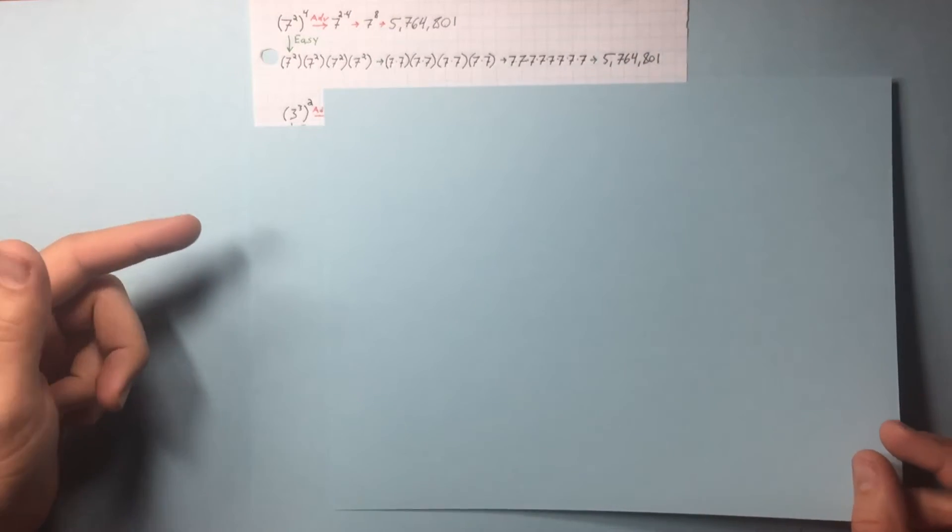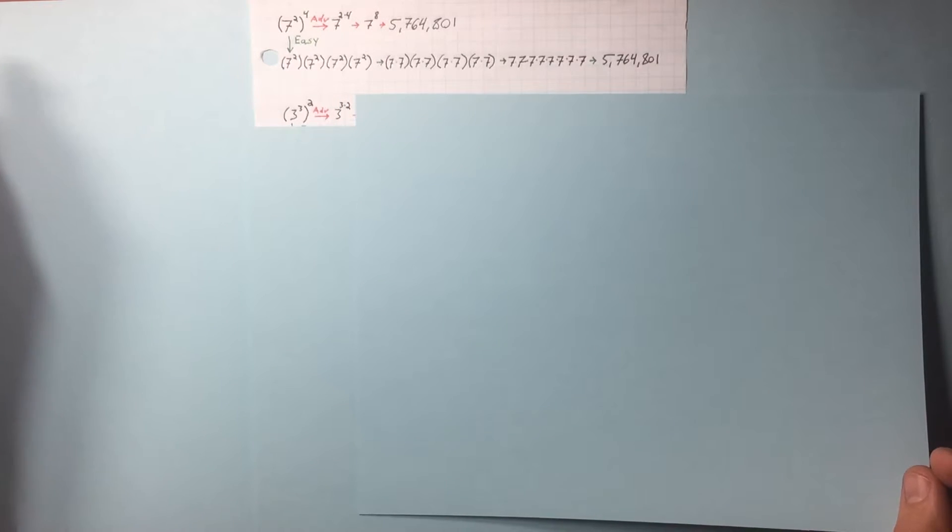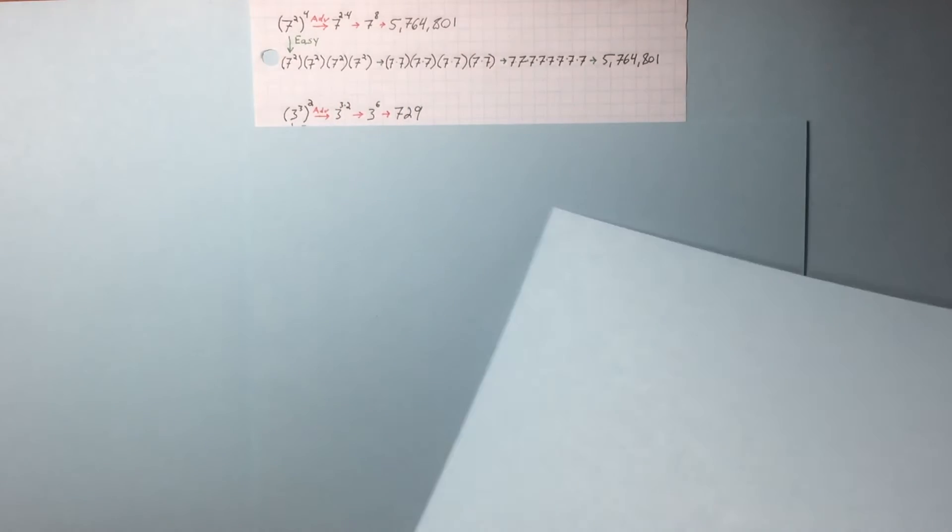3 cubed to the power of 2. The advanced way, you multiply those exponents together. You get 3 to the 6th power. Answer is 729.